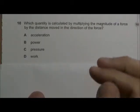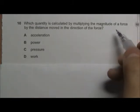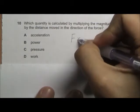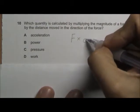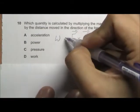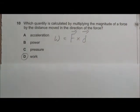This is a recall question. Which quantity is calculated by multiplying the magnitude of a force by the distance moved in the same direction of the force? This is actually force times distance in the same direction. And this is your work done. Answer D.